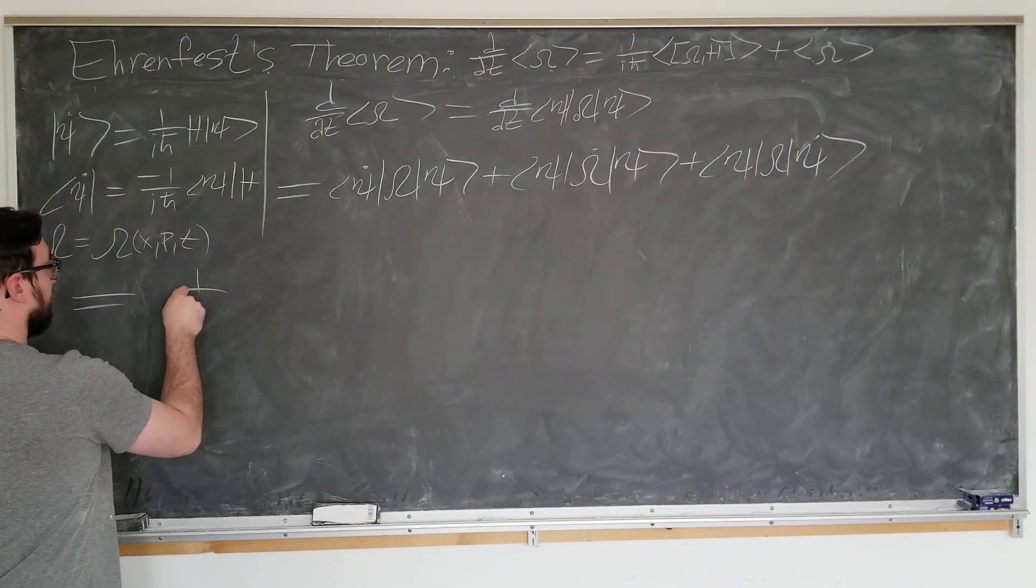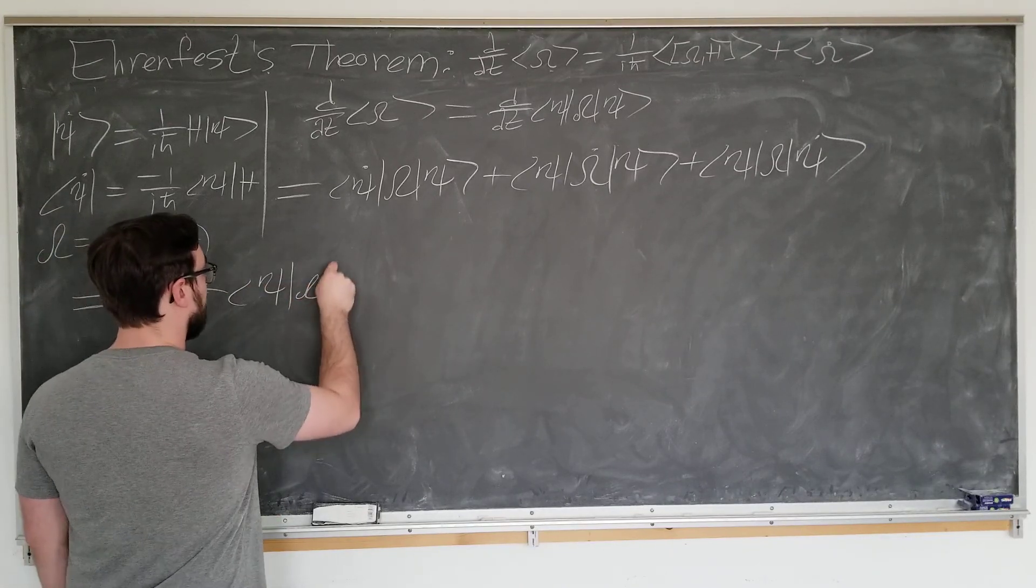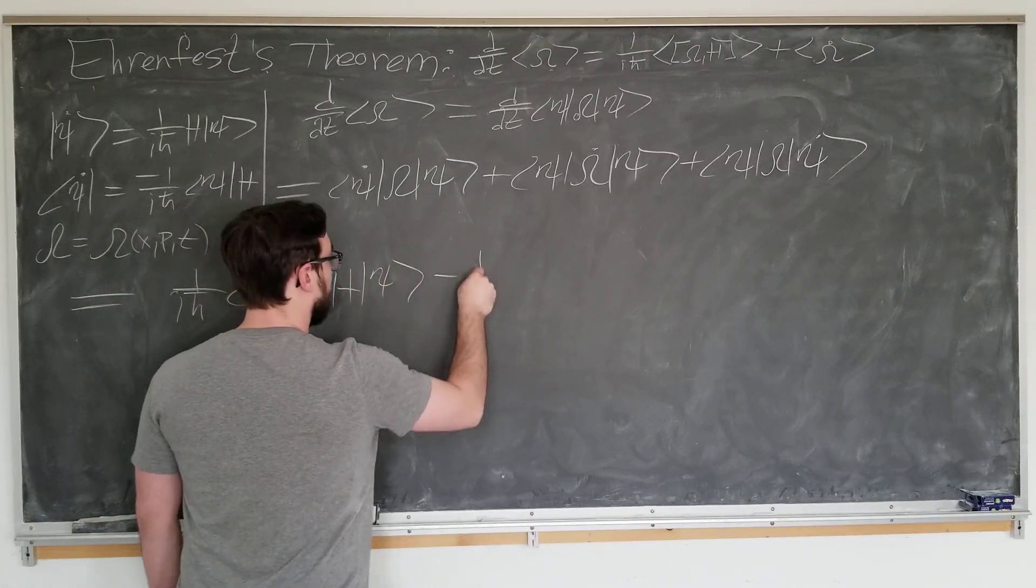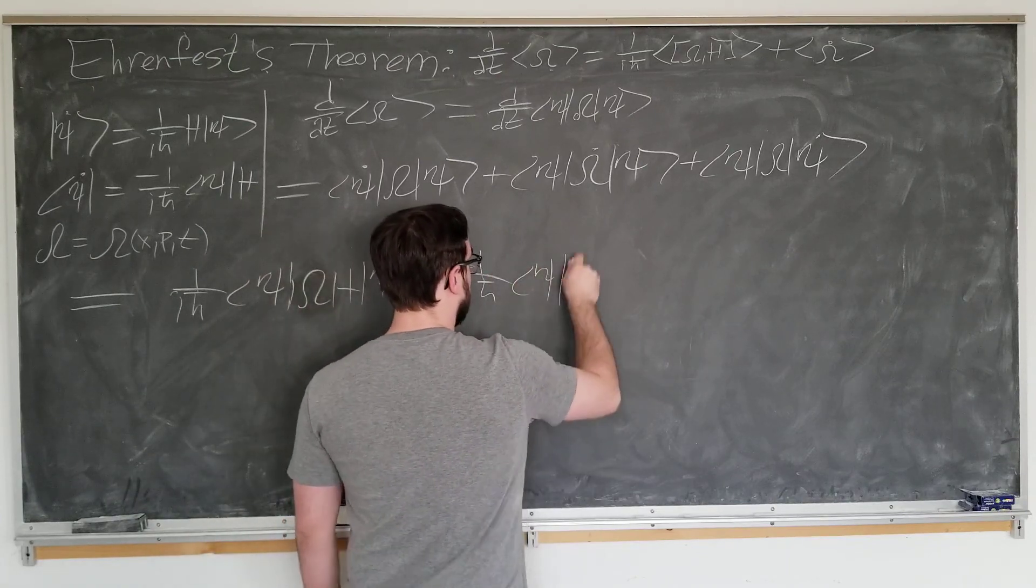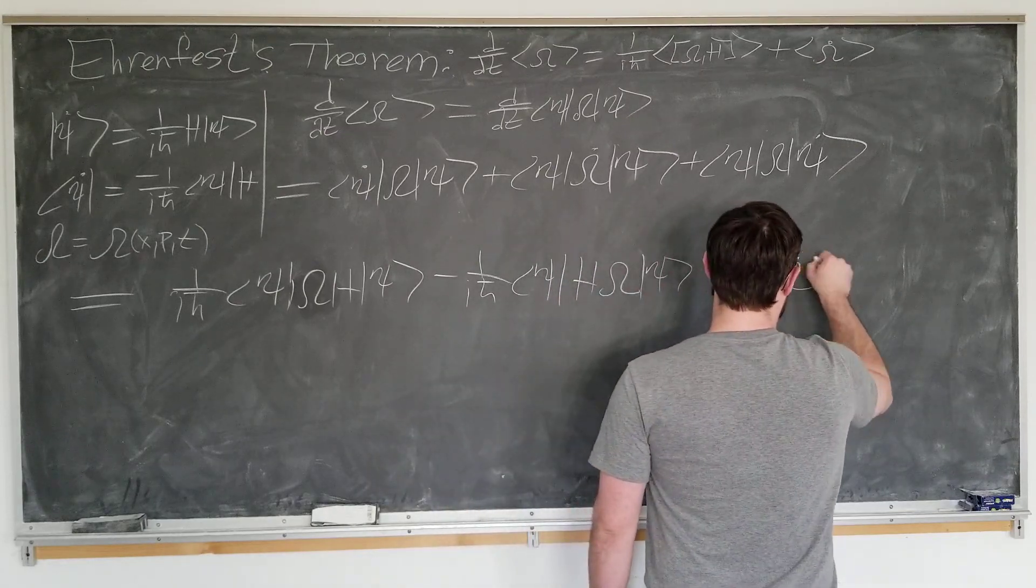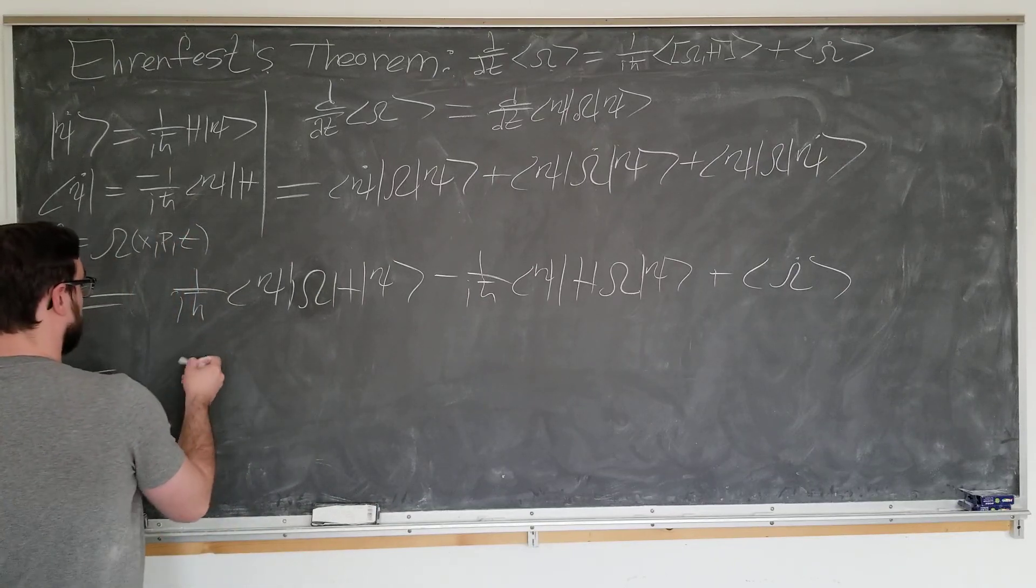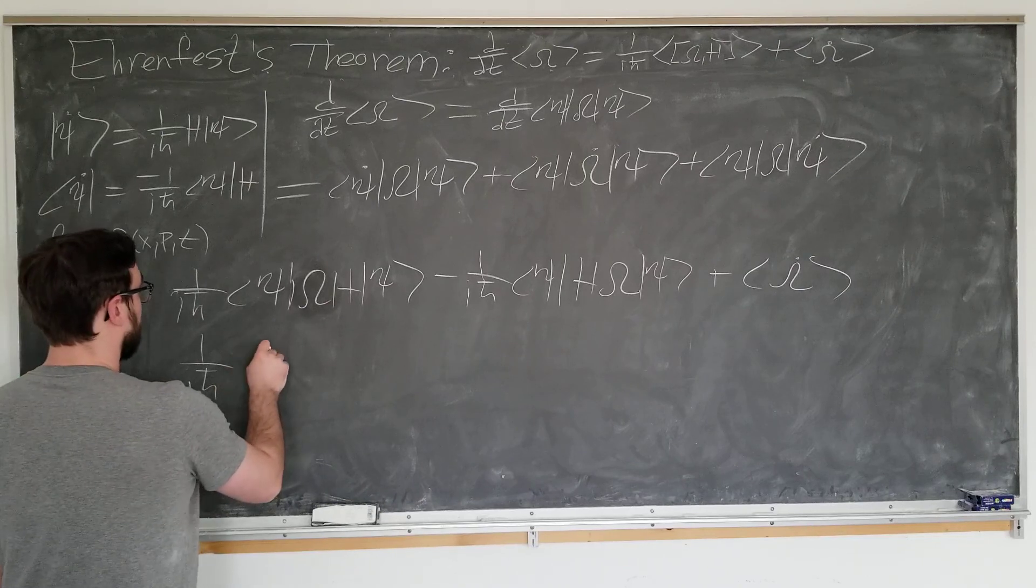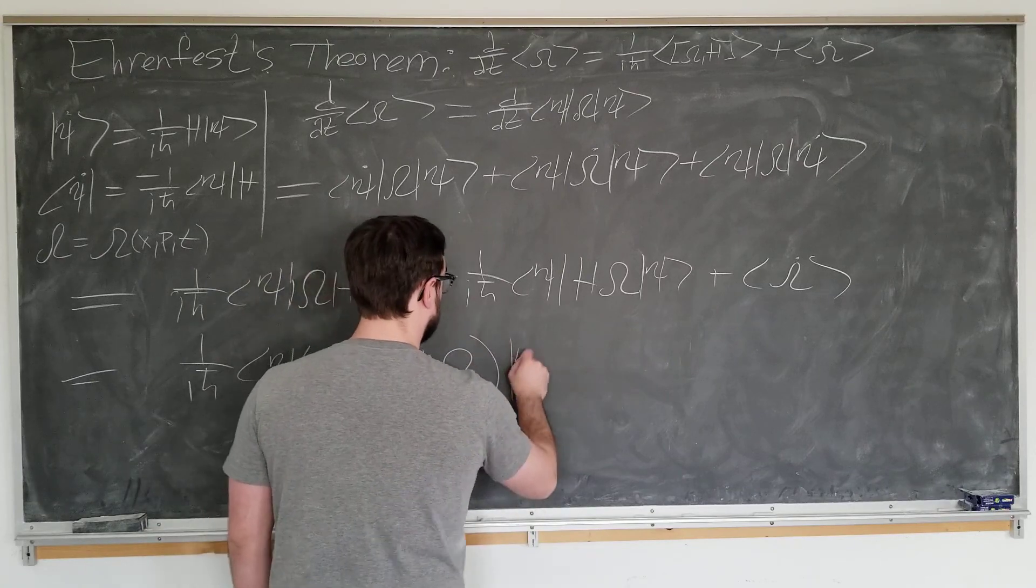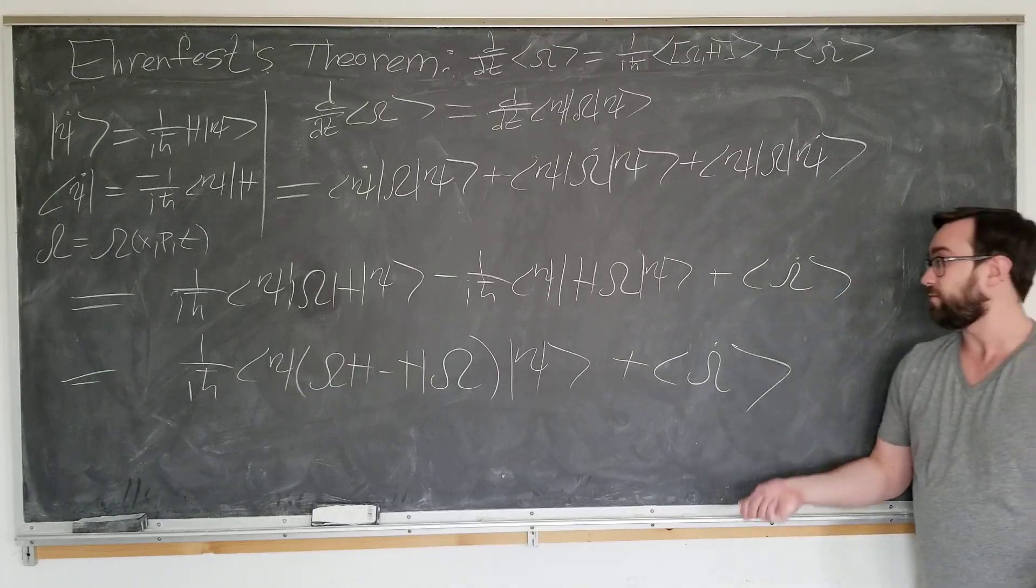That would be one over i h bar psi omega dot psi minus one over i h bar psi h on omega psi plus expectation value of psi dot, where we drop the psi since we're no longer useful to us.